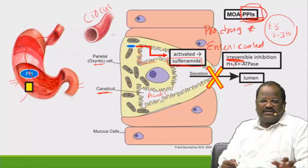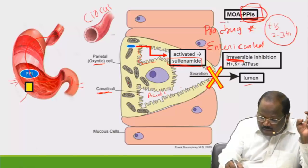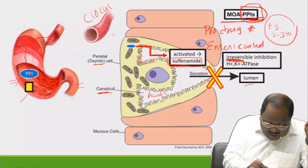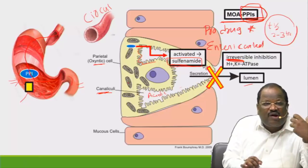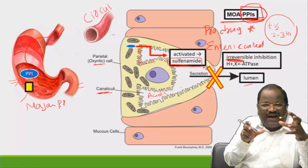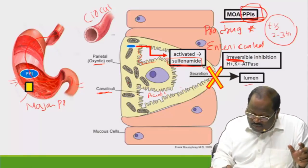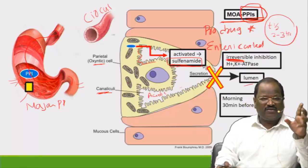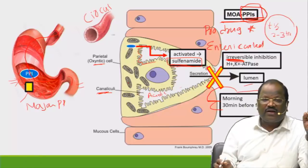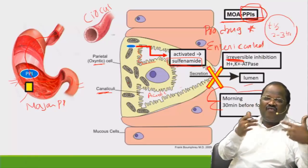Another important point: the H+/K+ ATPase pump is most active on an empty stomach, so proton pump blockers are taken on an empty stomach. Also, in the stomach there are a large number of parietal cells with many pumps, and the majority of proton pumps are most active in the morning hours. So proton pump blockers should be given in the morning, one hour before meals.